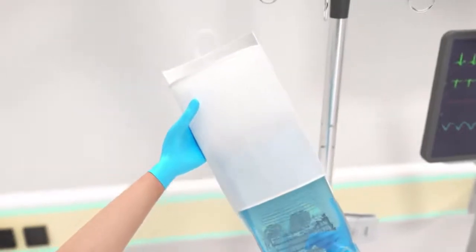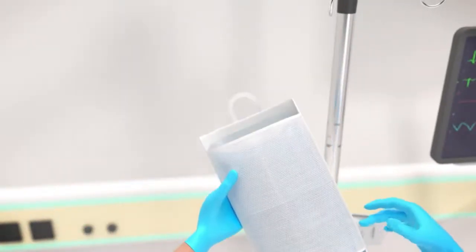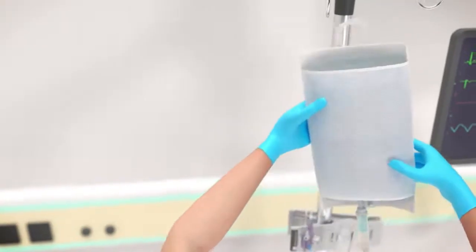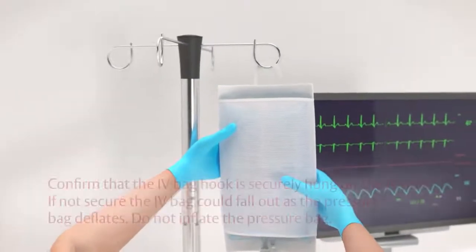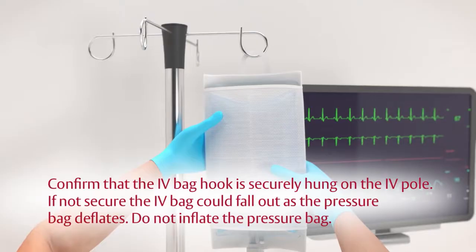Insert the IV bag into a pressure infuser bag and hang on an IV pole approximately 2 feet or 60 millimeters above the patient. Confirm that the IV bag hook is securely hung on the IV pole. If not secure, the IV bag could fall out as the pressure bag deflates. Do not inflate the pressure bag.